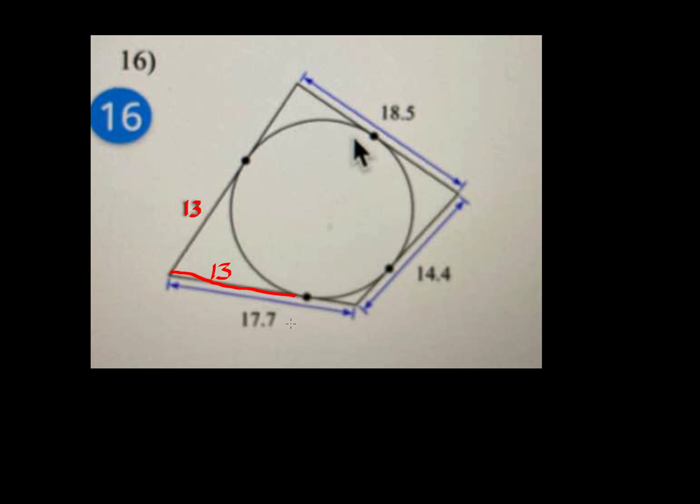However, the whole thing is 17.7, so if we minus 13 from 17.7, this green portion right there, that's 4.7.